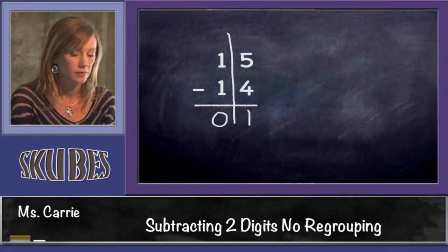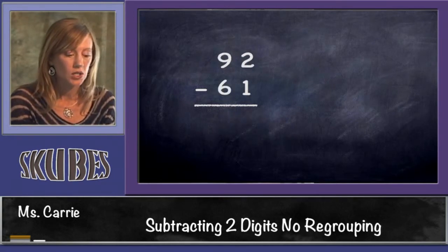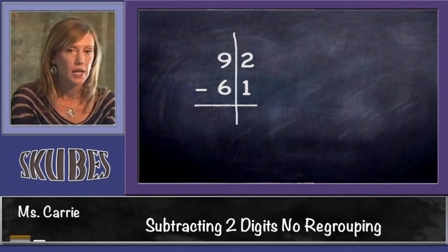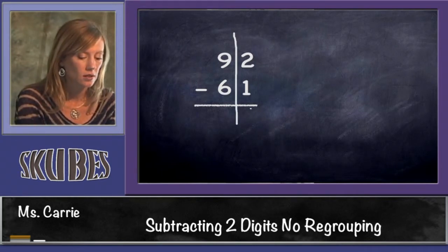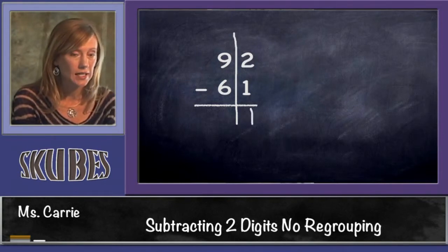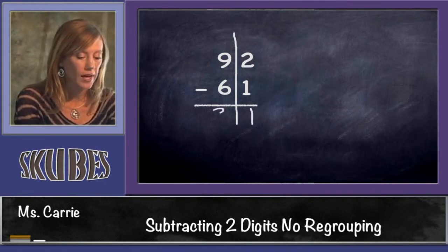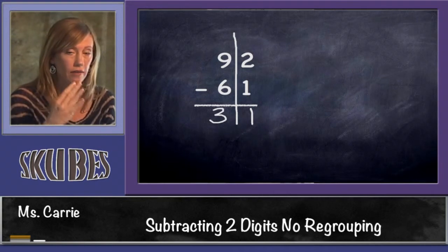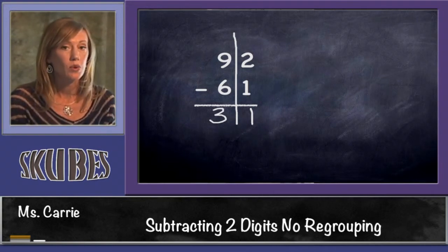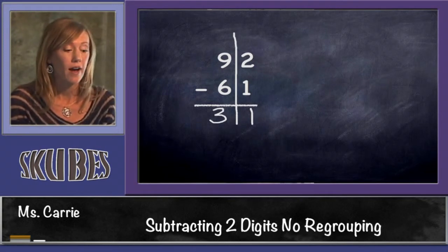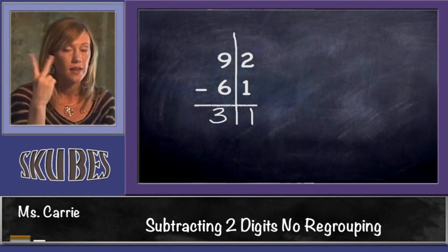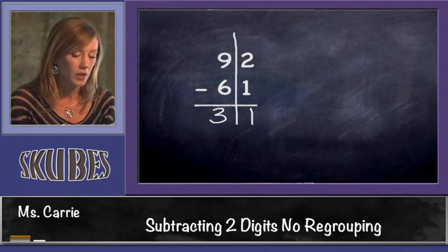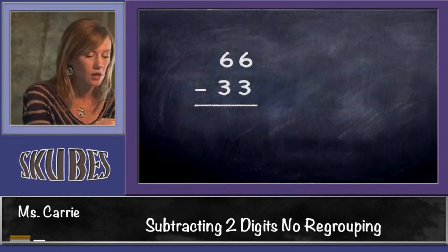Let's try 92 minus 61. Draw our line. We know that 2 take away 1 is 1, and 9 take away 6 is 3. Now one way to get this answer, 3, rather than go 9, 8, 7, 6, 5, 4, 3, is to start with the 6 and count up to 9. It's much faster. You could go 6, 7, 8, 9, get the same answer. So our answer to this problem is 31.